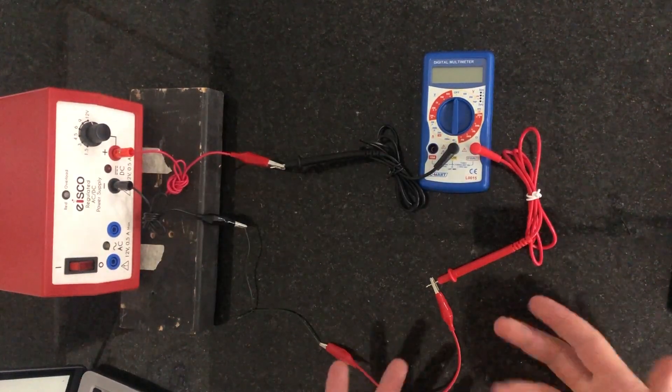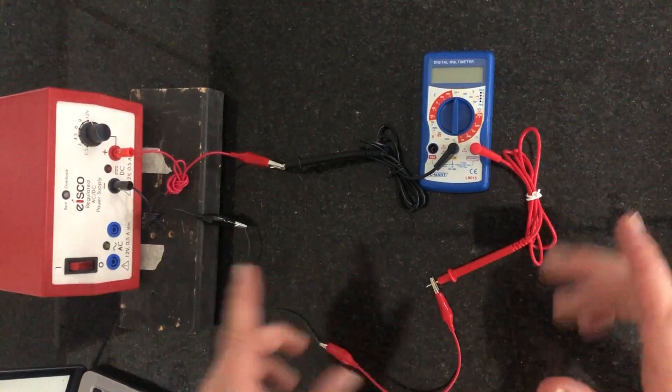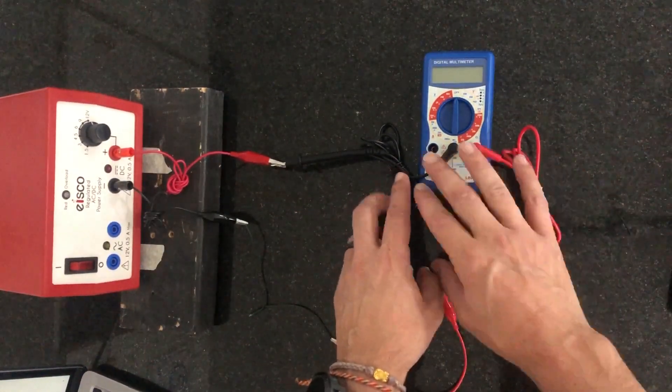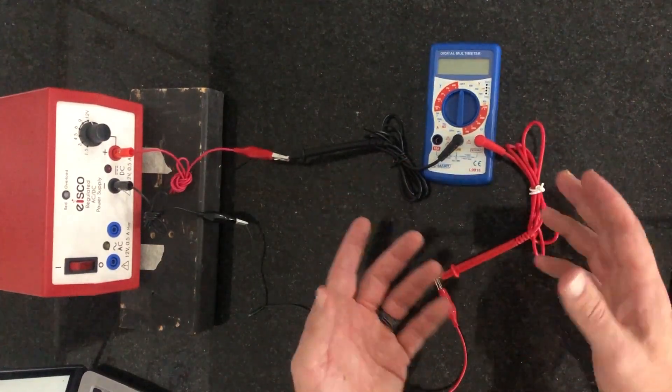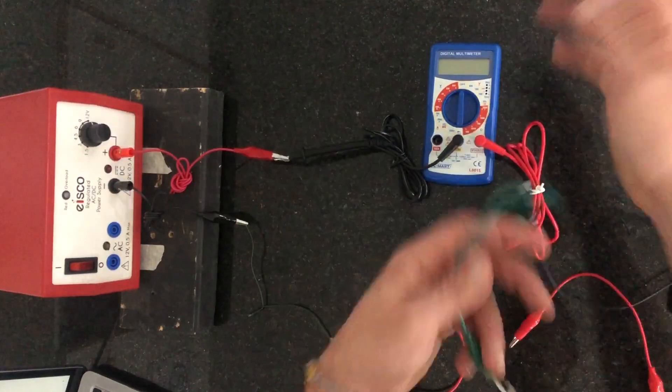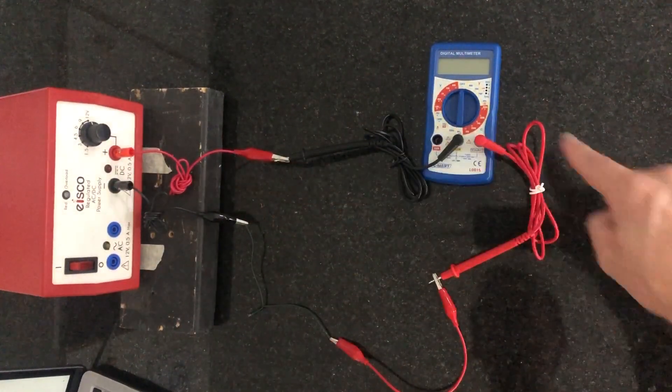This is the first time that we're using the multimeters and I just want to show you guys a couple things to help you along with this lab. Number one, stop untying these. Leave it tied so it's nice and together. If you untie all these, the wires get all over the place, you don't know what's going where, you got stuff everywhere. So keep them tied, keep it nice and tight so you can really see what's happening with the current.